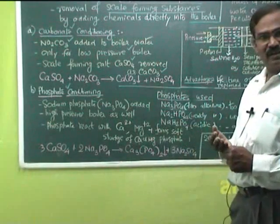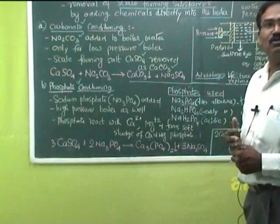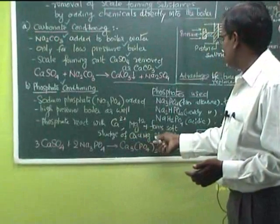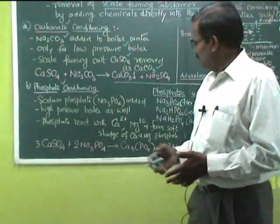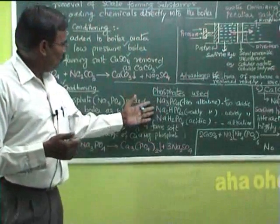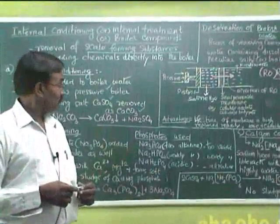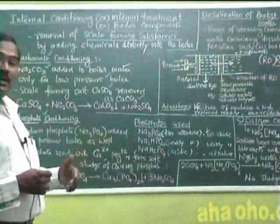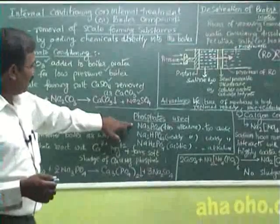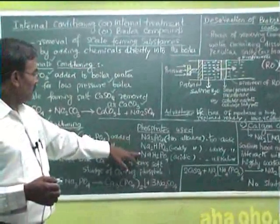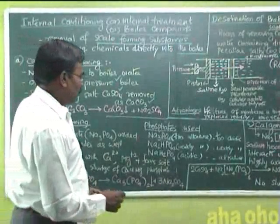The sludge is soft — only when it is soft can it be obtained as a sludge; if it were a hard precipitate, it would form a scale and removal would be a problem. This calcium and magnesium phosphate is a soft sludge that can be readily removed by filtration. Besides sodium phosphate, we have two more substances: sodium phosphate (strongly alkaline), di-sodium hydrogen phosphate (weakly alkaline), and sodium dihydrogen phosphate.